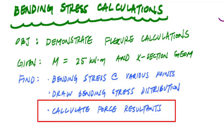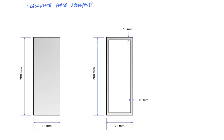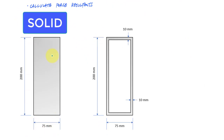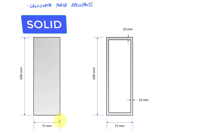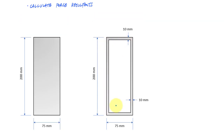I'm going to compare two cross sections. It's like I'm thinking about a beam built with a solid rectangular cross section that's 200 by 75 versus a beam made with a hollow rectangular cross section that has a height of 200 millimeters and a width of 75 millimeters, with walls that are 10 millimeters thick.